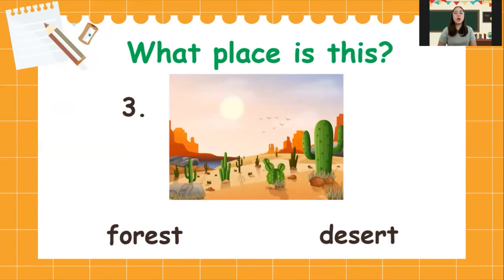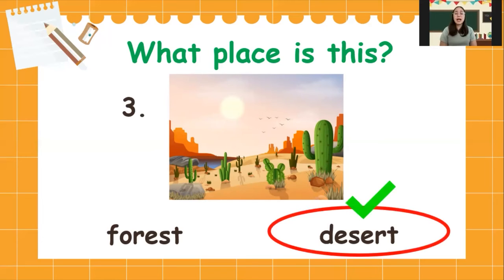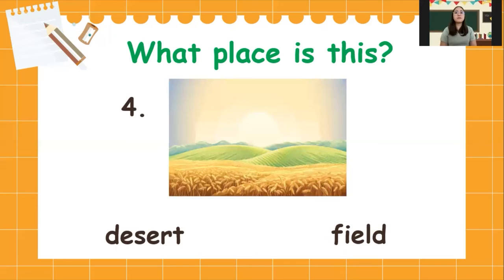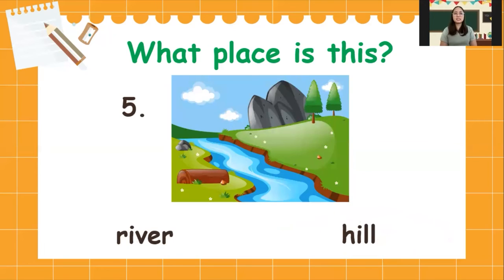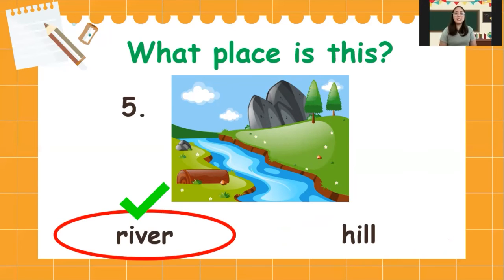Next, number three, what place is this? Is it forest or desert? The answer is desert. Next, number four, what place is this? Is it desert or field? The answer is field. Very good. Next, number five, what place is this? Is it river or hill? The answer is river. Very good.